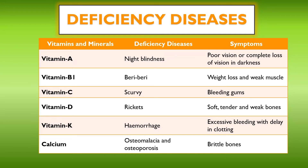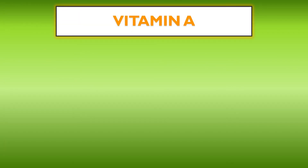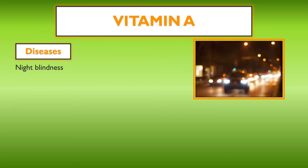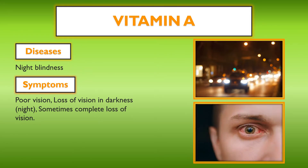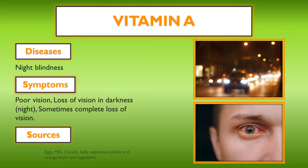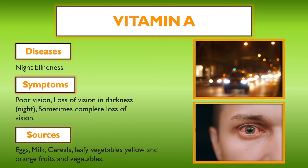Here is a table showing a list of some common deficiency diseases, their symptoms, and which vitamin or mineral deficiency causes them. First, the disease caused due to the deficiency of vitamin A is night blindness. As you can see from the picture, the person is not able to see clearly, especially during the night or in darkness, and sometimes there is complete loss of vision. Sources of vitamin A are eggs, milk, cereals, leafy vegetables, and yellow and orange fruits and vegetables. Consuming these can help recover from the disease.